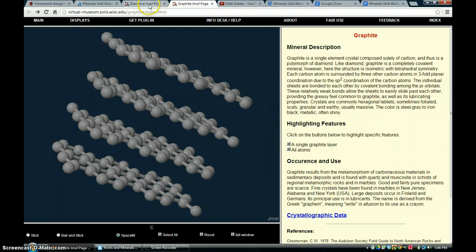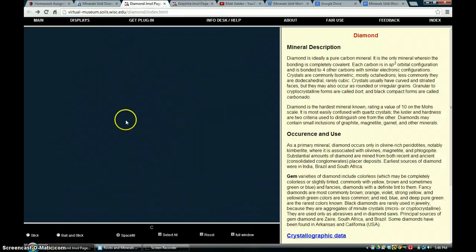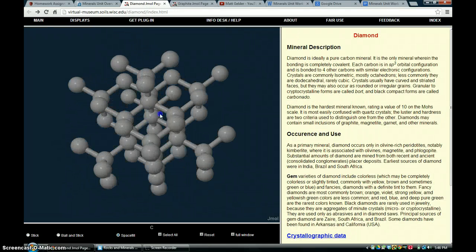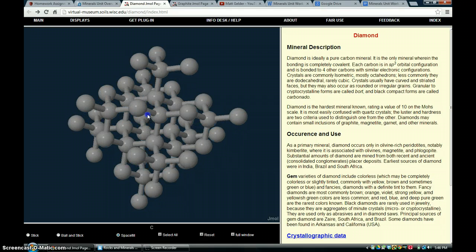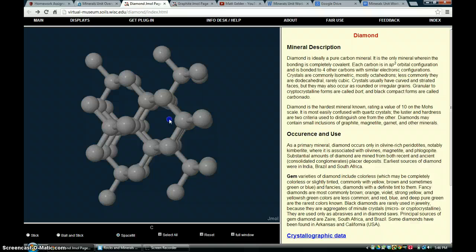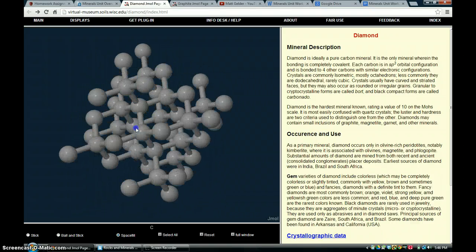Now if you look at diamonds, which are also made out of carbon, diamonds have a very different structure, and it's unique. If you look at it, all of the molecules, there are no sheets here, there are just carbon molecules attached to other carbon molecules.